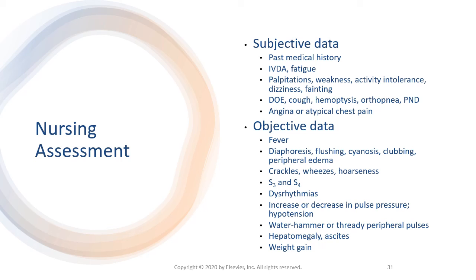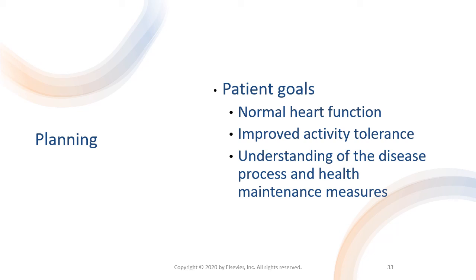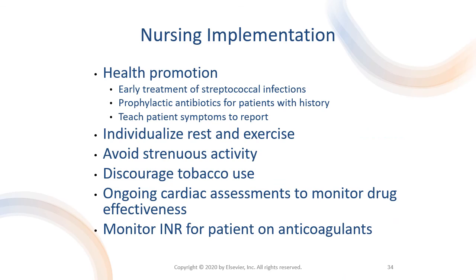Nursing assessment consists of both subjective and objective data. Table 36-13 in your textbook gives more details about what should be included in the assessment. Nursing diagnoses address impaired cardiac output leading to impaired tissue perfusion. Goals should look to achieving normal heart function, improving activity tolerance, and understanding the disease and health maintenance measures. Health promotion activities that encourage early treatment of streptococcal infections and provide prophylactic antibiotics for patients with a history of rheumatic fever are critical to preventing acquired valve disease. Any patient with certain heart conditions must receive prophylactic antibiotics.